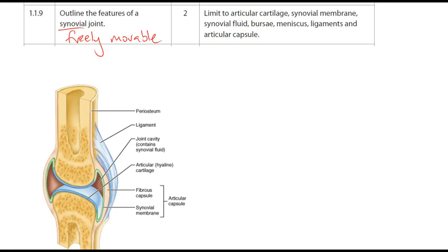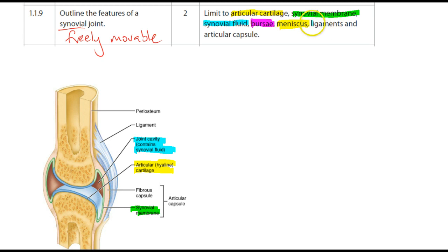What we will be looking at are the articular cartilage, also referenced as hyaline cartilage, our synovial membrane, synovial fluid which lives inside the synovial cavity or joint cavity, our bursae, our ligaments, and our articular capsule. The articular capsule is made up of the synovial membrane and also our fibrous capsule.